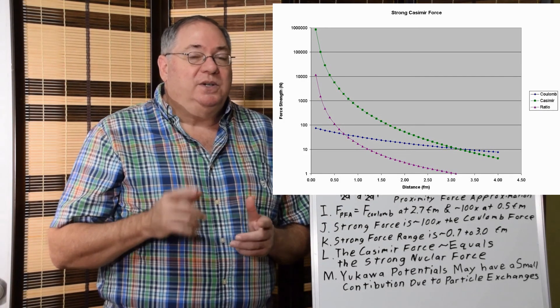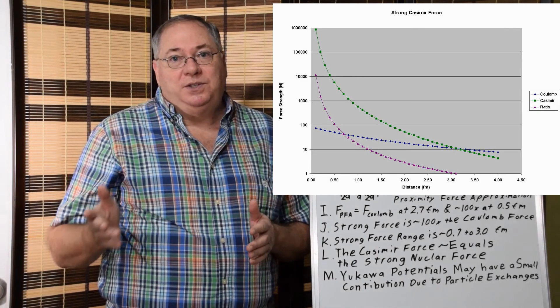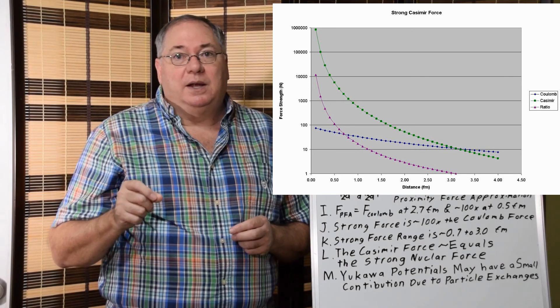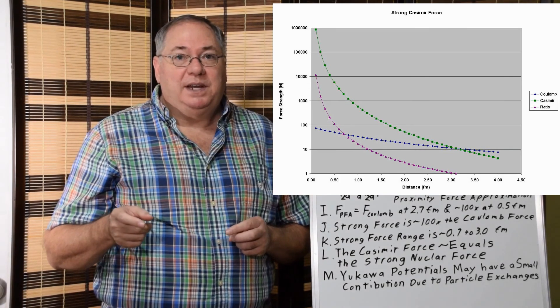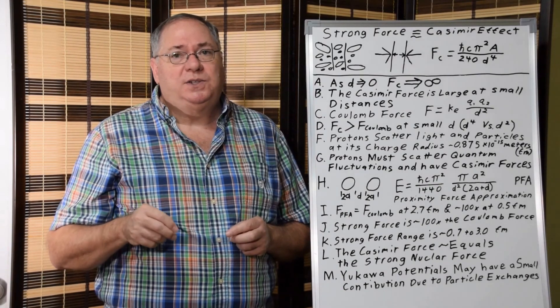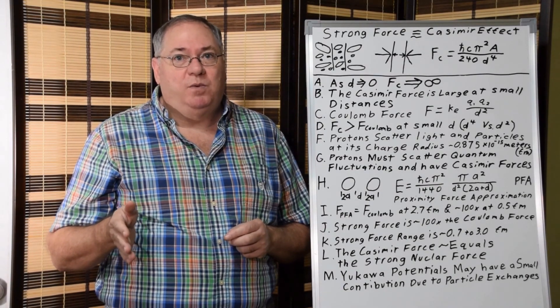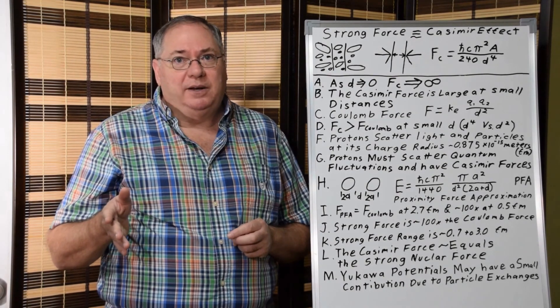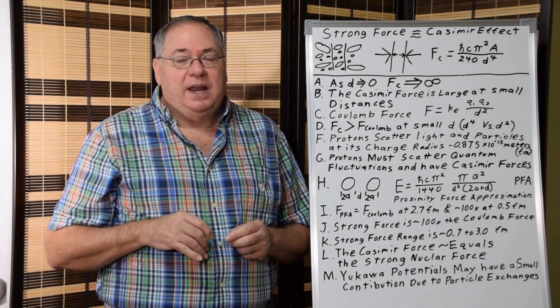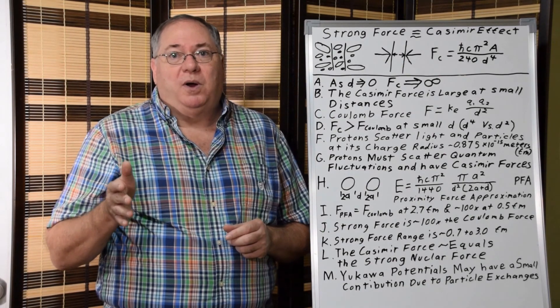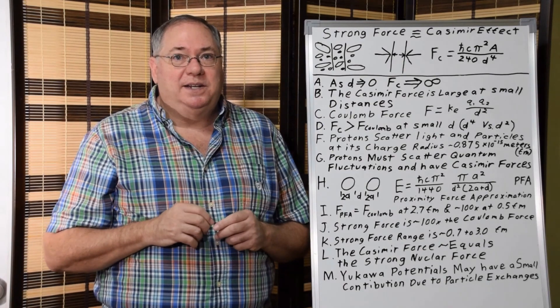And it turns out that that point is 2 femtometers, or not, 2.7 femtometers, 2.7 times 10 to the minus 15 meters. And this correlates very closely with the known range of the strong force, which is approximately 3 femtometers at the outer range. And once two protons become more than 3 femtometers apart, they tend to disassociate.